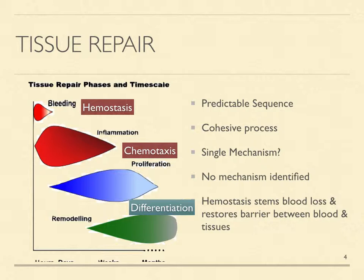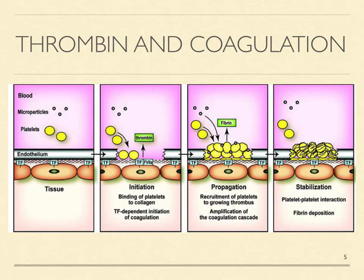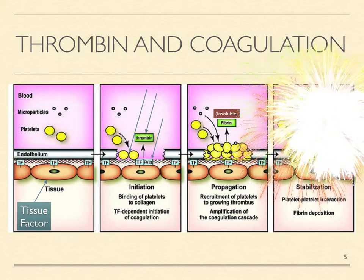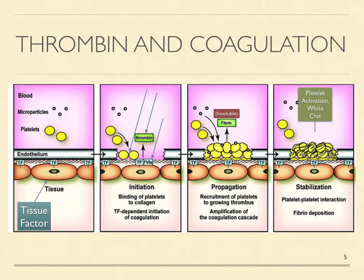The first event in tissue repair is hemostasis, which stems blood loss and restores the barrier between flowing blood and extravascular tissues. Coagulation begins with the formation of a white clot consisting of activated platelets. Note the rich layer of tissue factor in the arterial wall outside the basement membrane and beneath the vascular endothelium. Tissue damage immediately exposes this tissue factor to blood enzymes and initiates the generation of thrombin, soluble fibrin, and insoluble fibrin in the damaged tissues.